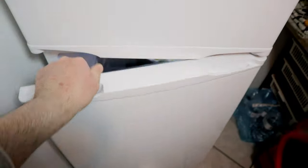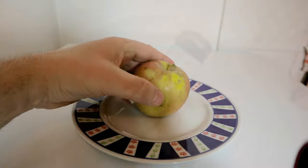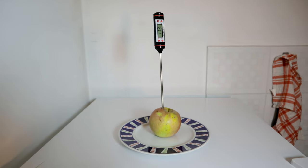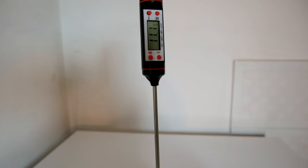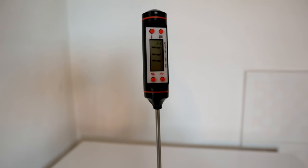I check the internal temperature of an apple taken from the fruit and vegetable drawer. Always with the thermostat set to 1, the detected internal temperature is 11.1 degrees.